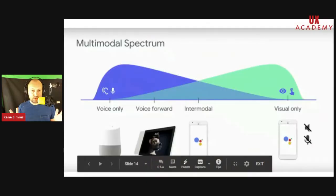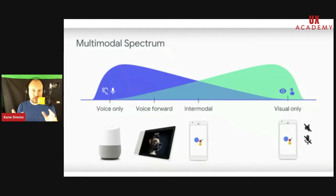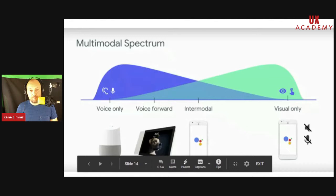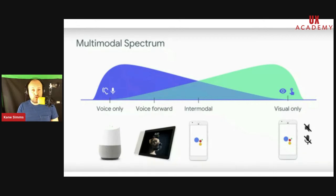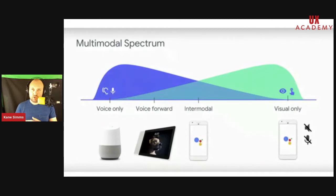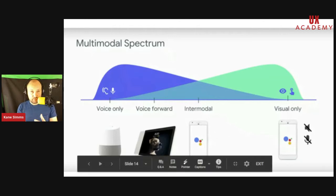If you look at the spectrum of a conversation designer's role, it starts at one end with voice only — pure audio, spoken speech and received audio. Then voice forward, where speech still leads but there's an assistive screen. Then intermodal, combining talking, tapping, swiping, and clicking. And then visual only, where everything is touch-based or typing-based. Conversation designers work right across this spectrum — it isn't just dialogue. If an interaction is both touch-based and speech-based, that's where a conversation designer needs to work as well.